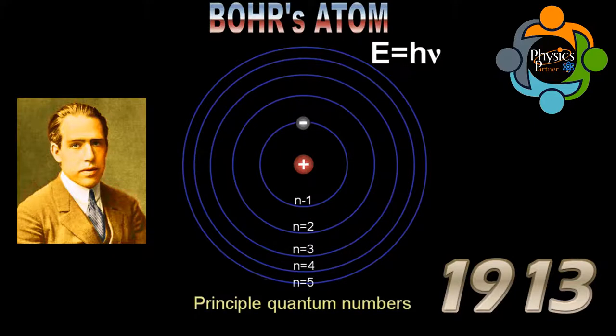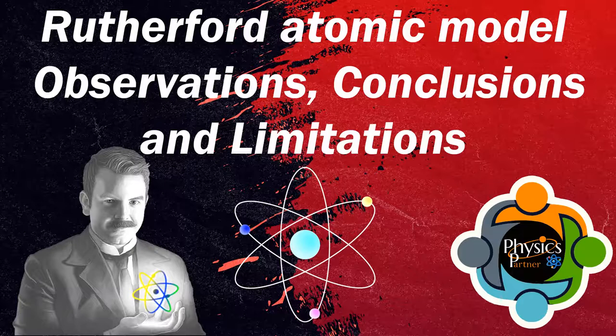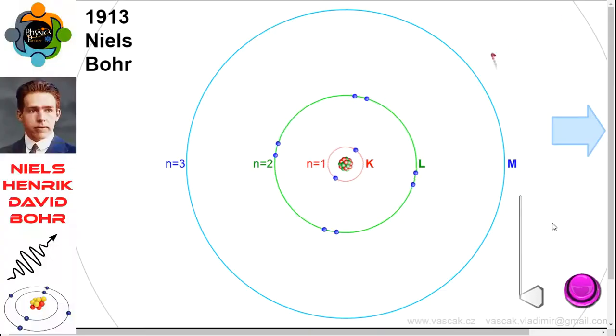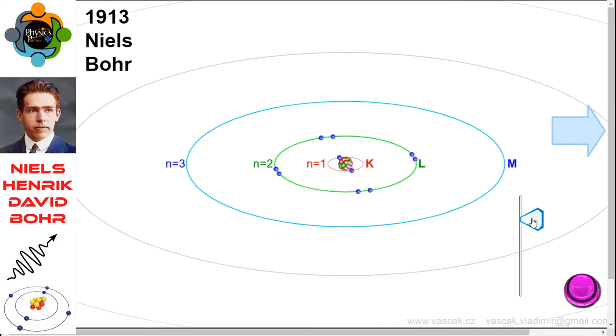The Bohr model is a modification of an earlier atomic model, the Rutherford model. You can refer to my video on the Rutherford model. The Bohr model has an atom with a positively charged nucleus surrounded by negatively charged electrons that have circular planetary-like orbits.